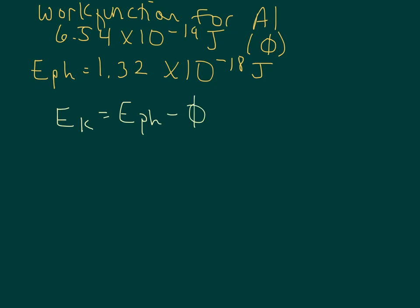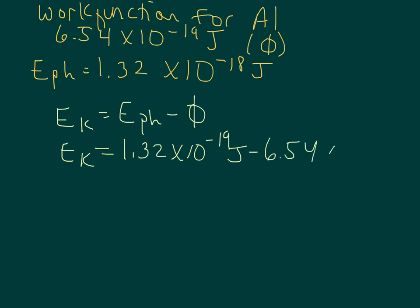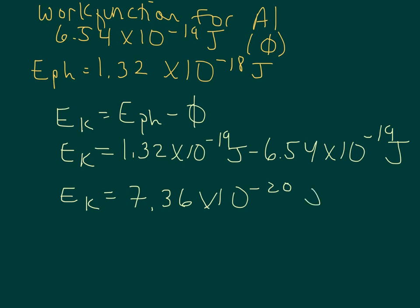I think we're ready to plug everything in, so let's go ahead and do that. The kinetic energy is equal to 1.32 times 10 to the negative 18 joules minus 6.54 times 10 to the negative 19 joules. After we do that math, we end up with the kinetic energy of the ejected electron equal to 7.36 times 10 to the negative 20 joules.